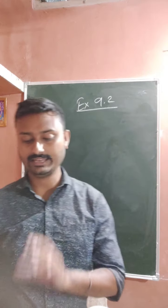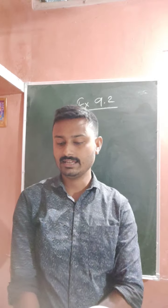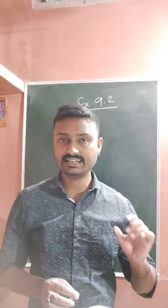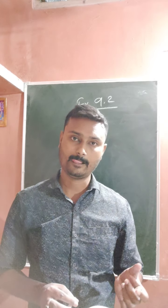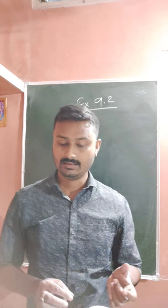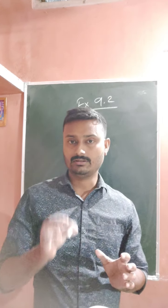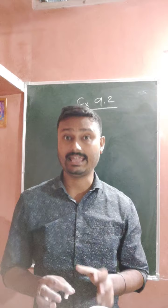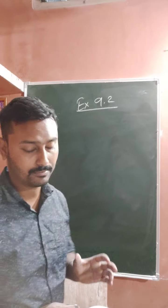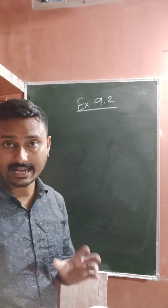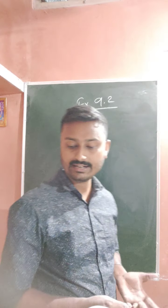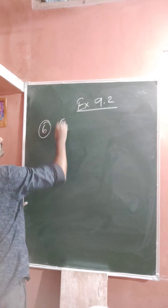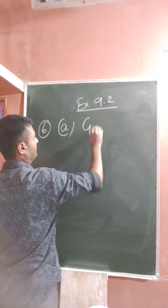One special thing to note here: in the case of ratios, in some questions the units are not given in the same form. For example, 75 centimeters is to 1 meter. Your task is to make the units alike — that means you have to convert them into the same unit before comparing.